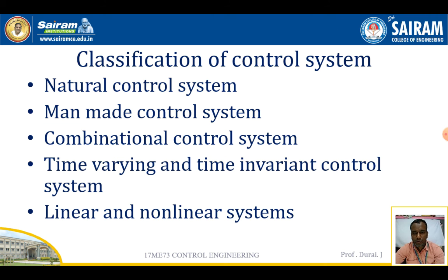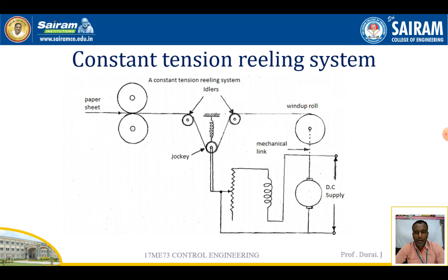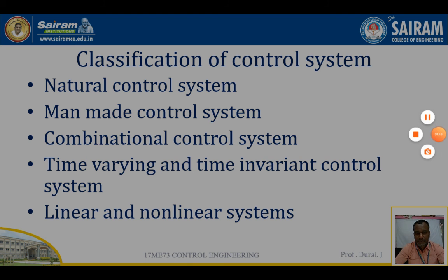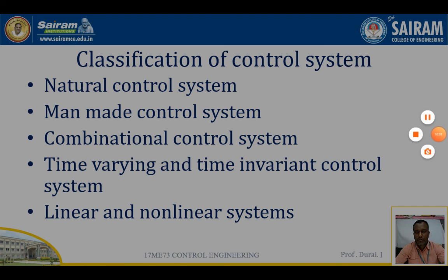There are many applications where control engineering is used, mainly in automatic controller systems. This is about constant reeling and the classification of control systems. In the next video, we are going to discuss open loop control system and closed loop control system with examples. Thank you.